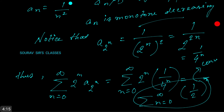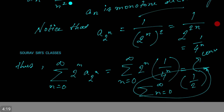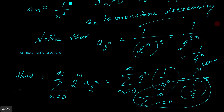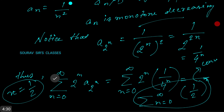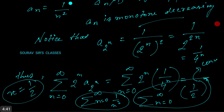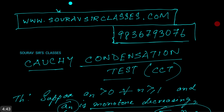Since this series converges — it is a geometric series with x equal to 1/2 — we now notice that the series from n equals 0 to infinity of 1/n² also converges by direct application of the Cauchy Condensation Test.